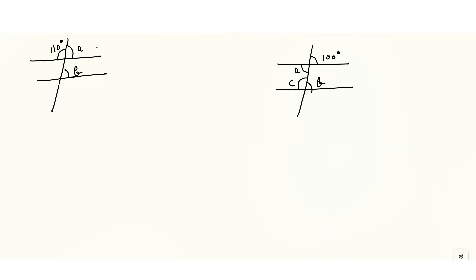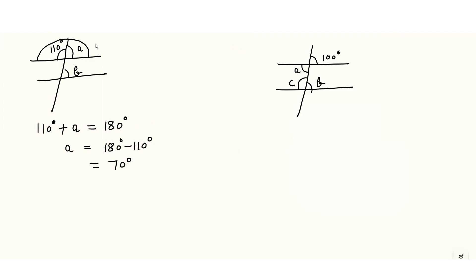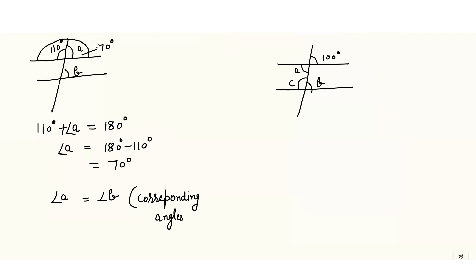You can see two different questions here. In the first question, to find angle a, I will use the angles on a straight line rule — that means 110 degrees plus a equals 180 degrees, so a equals 180 minus 110, which is 70 degrees. Next, angle a equals angle b because they are corresponding angles, and corresponding angles are always equal. So if angle a is 70 degrees, then angle b is also 70 degrees.